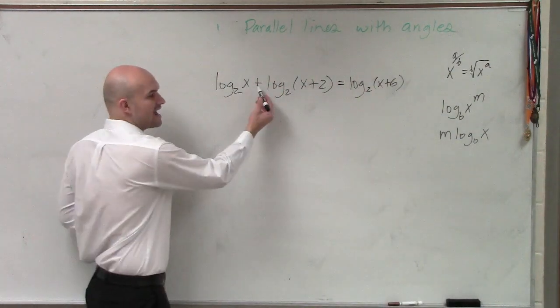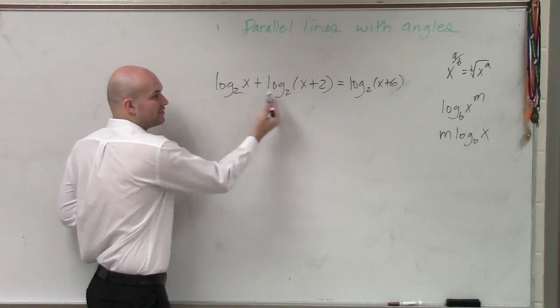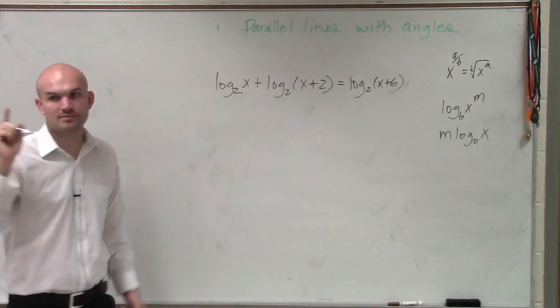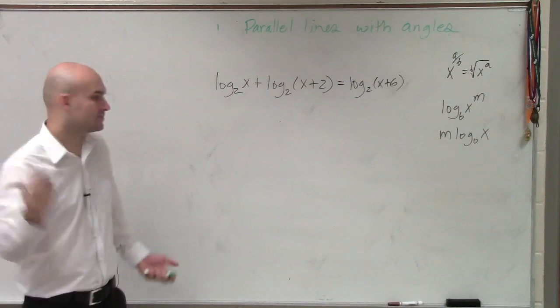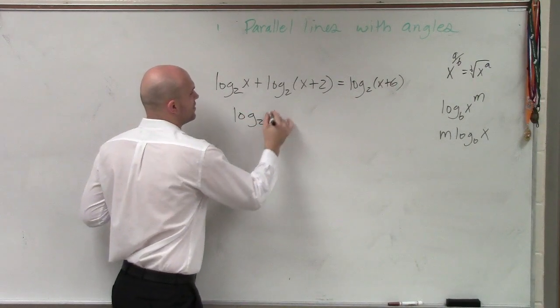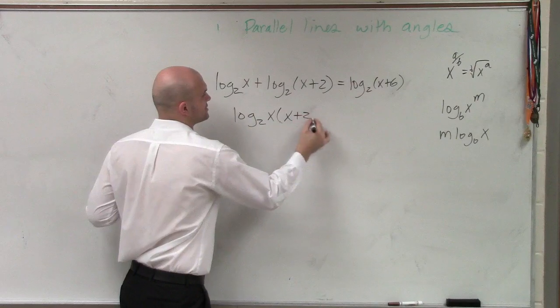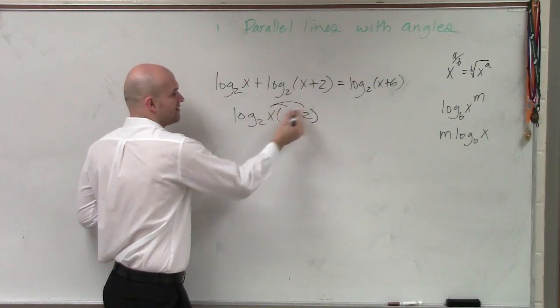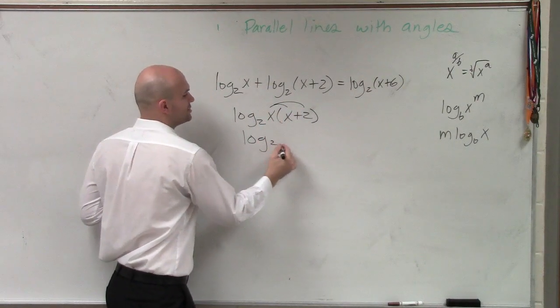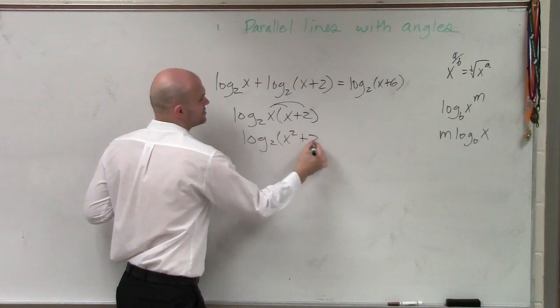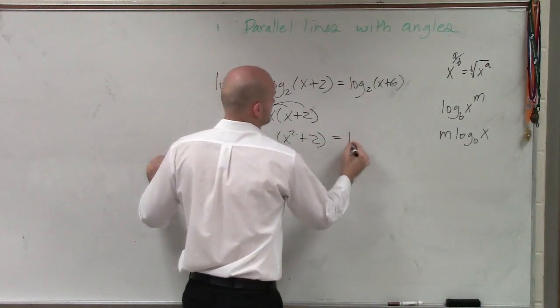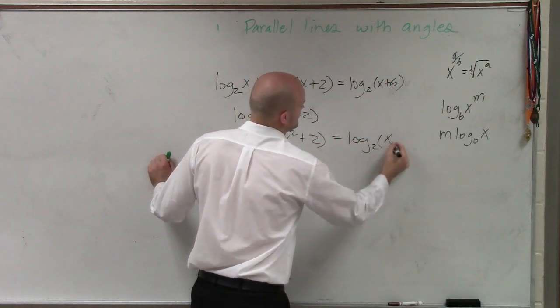So we need to practice, how can we condense this? Well, since I have an addition, I know I can rewrite that as one single logarithm of multiplication. Log base 2 of x times x plus 2. Now, I can simplify that. Log base 2 of x squared plus 2x equals log base 2 of x plus 6.